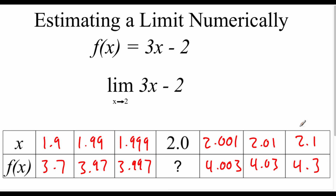We're approaching 2 from both the left and right-hand side, and we're trying to figure out what number we're getting really, really close to. As we approach from the left-hand side, it looks like we're getting really close to 4. So we can estimate the limit of 3x minus 2 as x approaches 2 is about 4.